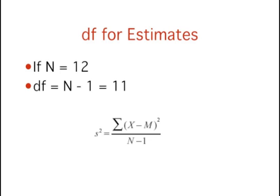Recall from the section on variability that the formula for estimating the variance in a sample has n minus 1 in the denominator. Specifically, the estimated variance equals the sum of the squared deviations divided by the number of observations minus 1. The denominator of this formula is the degrees of freedom.